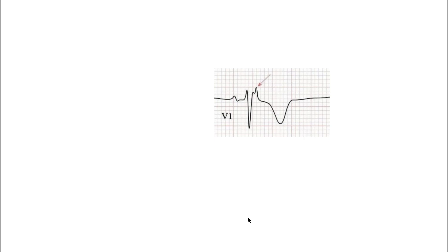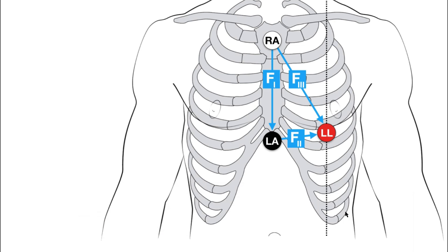If we have a strong suspicion of ARVC in a patient and we do not find an epsilon wave in leads V1, V2, or V3, then we can use Fontaine leads, which are a modification of the normal leads V1, V2, and V3. In Fontaine leads, the right arm electrode is placed over the manubrium, the left arm electrode is placed over the xiphoid process, and the left leg electrode is placed in the fifth intercostal space mid-clavicular line. These leads record activity over the right ventricle, making the epsilon wave more prominent if present.